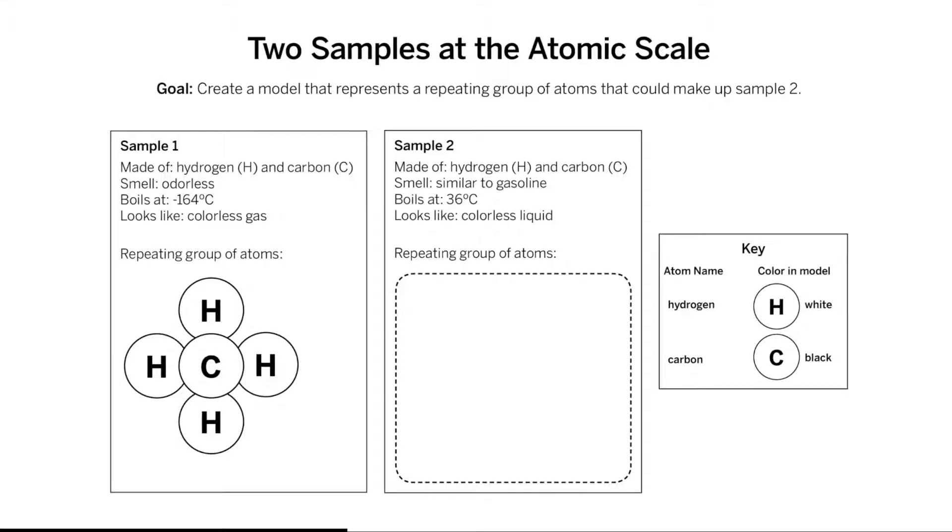Two Samples at the Atomic Scale. Scientists often use models to illustrate their ideas about how something works. In this unit, you will be using a visual model called a modeling tool to show your ideas about substances at the atomic scale.